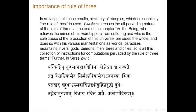Bhaskara talks about the importance of the rule of three. He says that in arriving at all these results, the similarity of triangles — which is essentially the rule of three — is used. He stresses the all-pervading nature of the rule of three at the end of the chapter: 'As the being who relieves minds of worshippers from suffering pervades the whole universe in various manifestations as worlds, paradises, mountains, rivers, gods, demons, men, trees, and cities — so is all this collection of instructions for computations pervaded by the rule of three terms.'